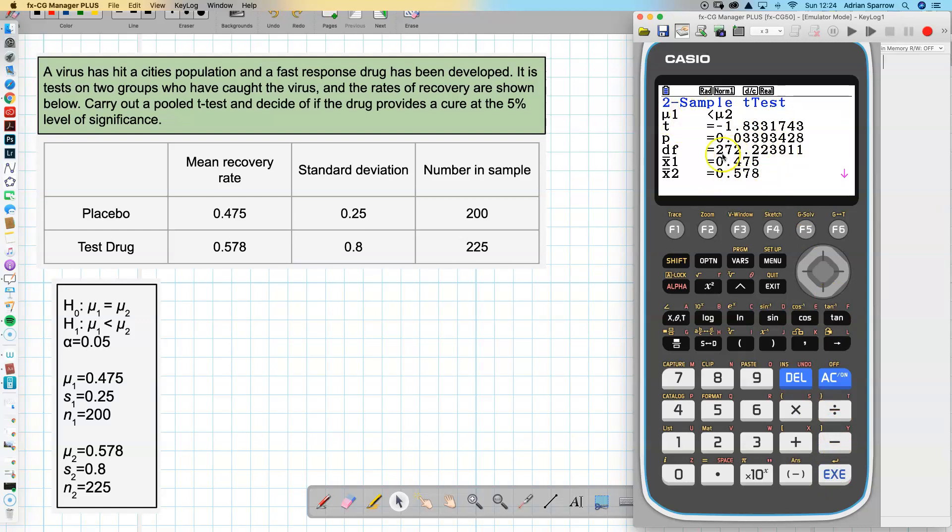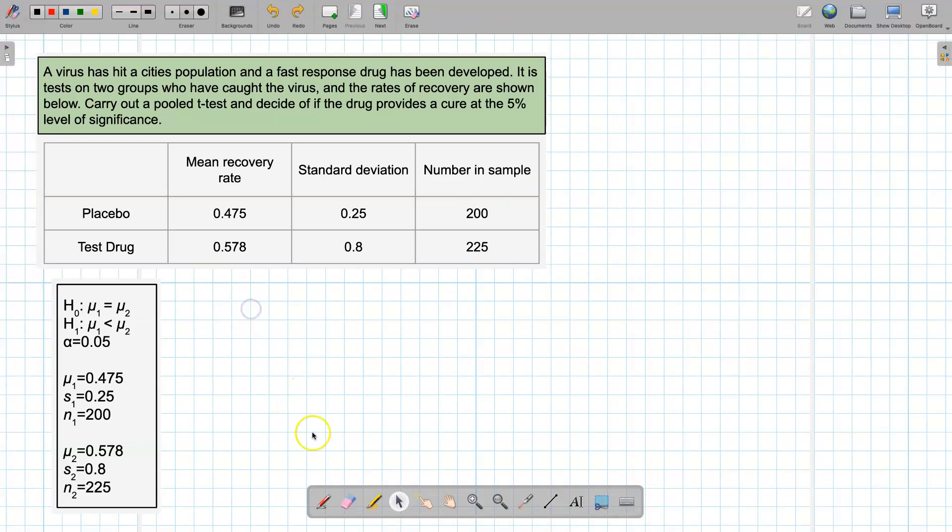Press execute and I've got two really important things here - I've got the t value and the p value. Let's just jot these down. t is negative 1.83, and you might be asked for that.